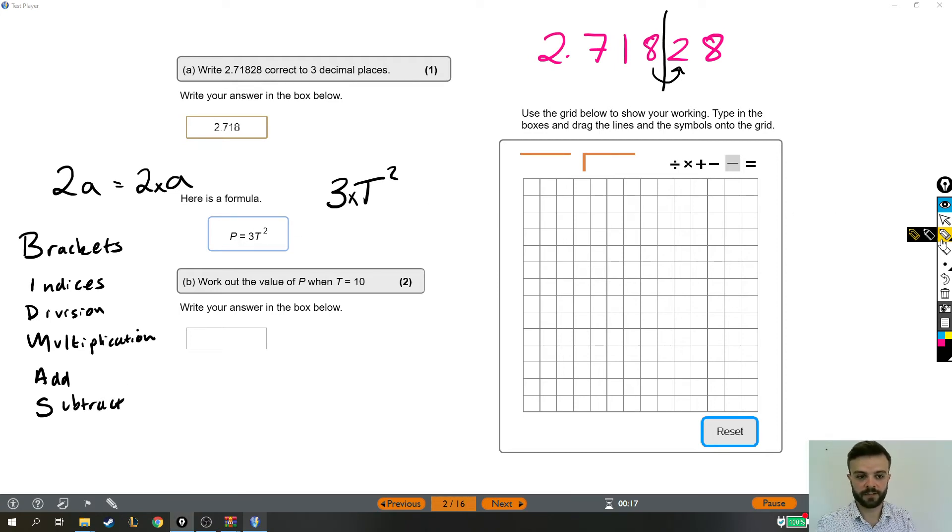Now, what we have got is we've got indices. We've got a squared, which is this one. And we also have a multiplication. But you can see, because indices comes first, we have to do it first.